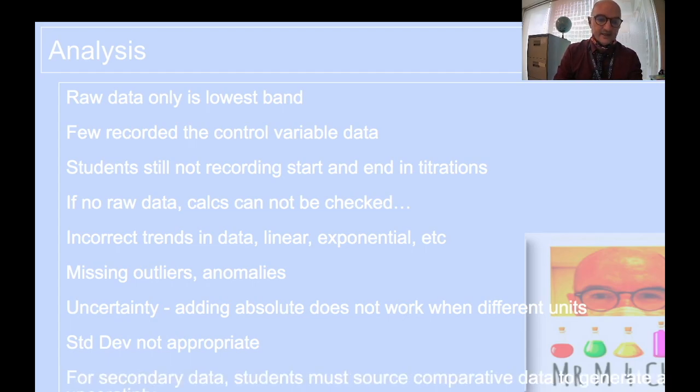For secondary data, students must source comparative data to get your uncertainty. At the very minimum, take the last decimal place, probably two decimal places, 0.01, divide it by the value, times it by 100. You've got percent uncertainty. The mark, again, is for considering the uncertainty, not how to do it.